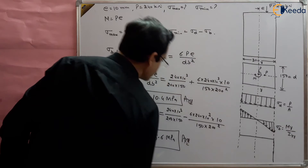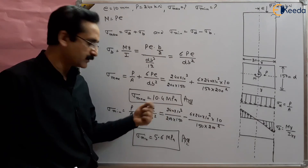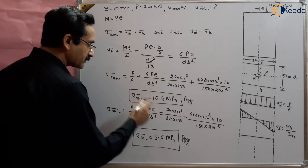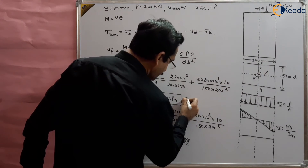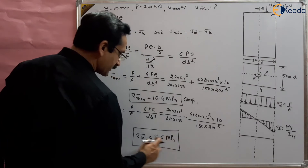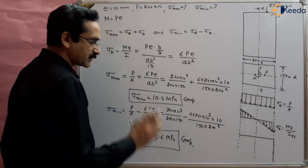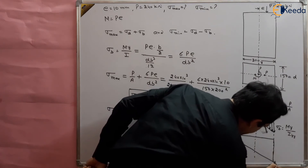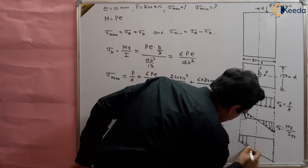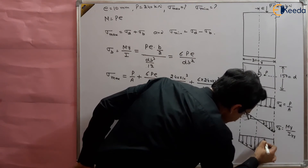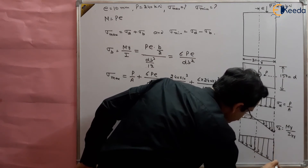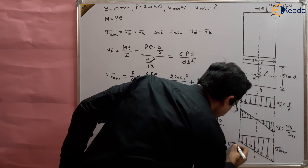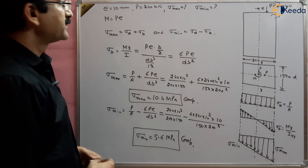So the two answers are: maximum stress = 10.4 mega Pascal and minimum stress = 5.6 mega Pascal. The minimum stress is also positive, meaning it is also compressive. Both stresses are compressive. The stress distribution curve goes from 10.4 MPa on one side to 5.6 MPa on the other side, both compressive.